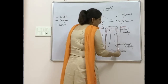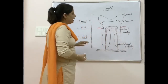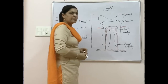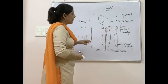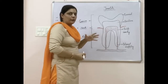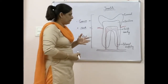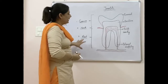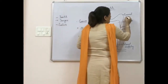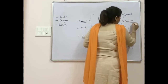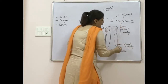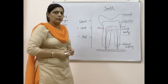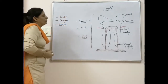Inside the root there is the pulp cavity. In this cavity there is an enormous supply of blood vessels and nerves. Because of these nerves, sometimes we get a sensation — like an itching feeling when we eat something sour or very sweet. The structure of tooth includes enamel, dentine, the pulp cavity, and inside it blood vessels and nerves.